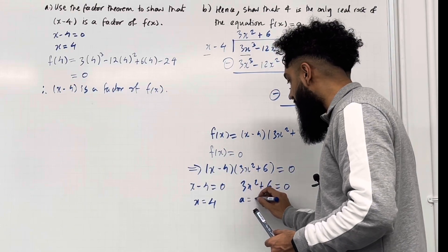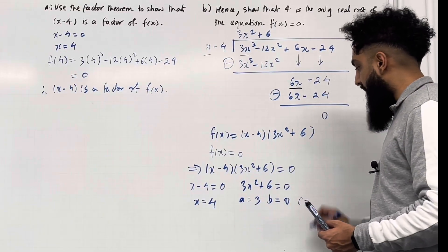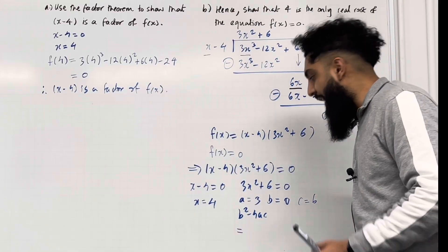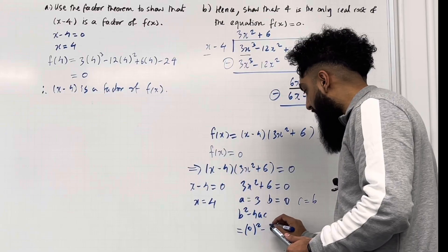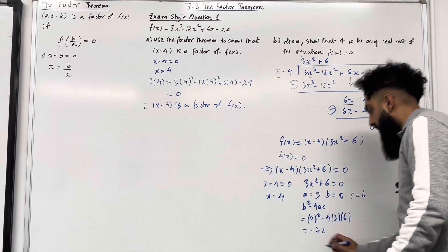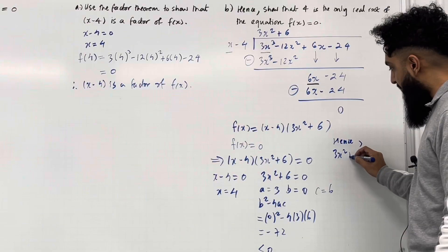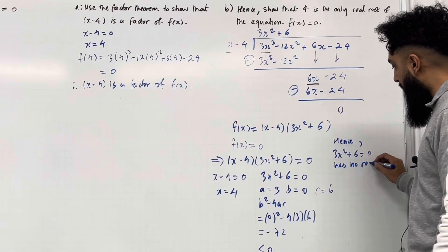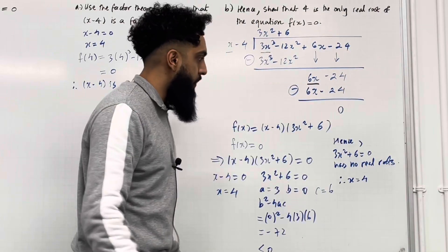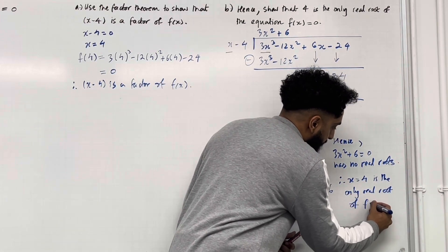For 3x² + 6: a = 3, b = 0 (no x term), and c = 6. The discriminant is b² − 4ac = 0² − 4(3)(6) = −72, which is less than 0. Hence we can conclude that 3x² + 6 = 0 has no real roots. Therefore x = 4 is the only real root of the equation f(x) = 0.